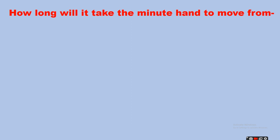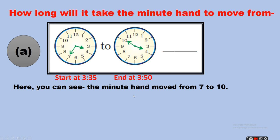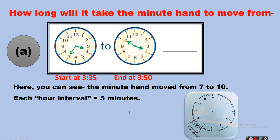First question: how long will it take the minute hand to move from here to here? The starting time is 3:35 and the ending time is 3:50. So how many minutes did the minute hand take to go from 7 to 10? The clock is divided into 5-minute sections — each number on the clock represents an interval and is evenly spaced by 5-minute intervals.